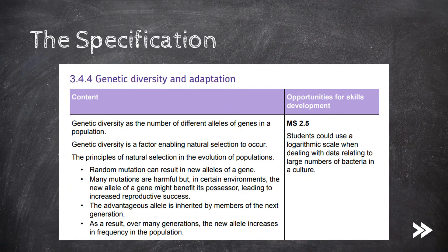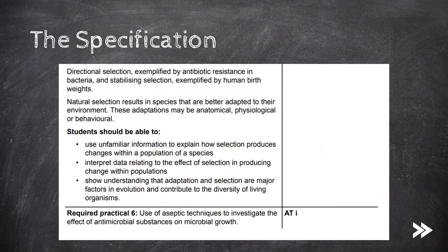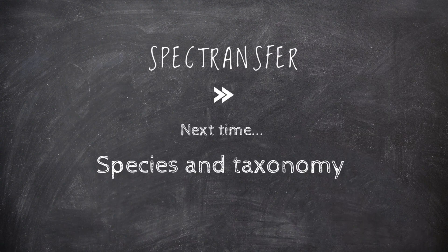So we've defined genetic diversity, we've had a look at natural selection. We've covered directional and stabilising selection, as well as the two examples of antibiotic resistance and human birth weights. And we've also covered how natural selection results in species that are better adapted to their environment, and how these adaptations may be anatomical, physiological, or behavioural. That would be it for now, thanks for watching — please feel free to comment, add any ideas or suggestions, and subscribe. Next time we'll be looking at species and taxonomy.